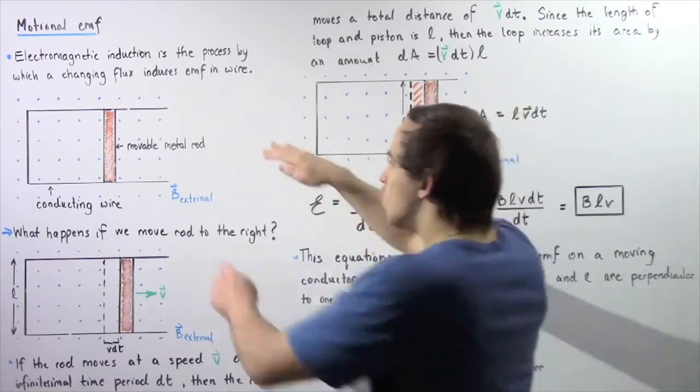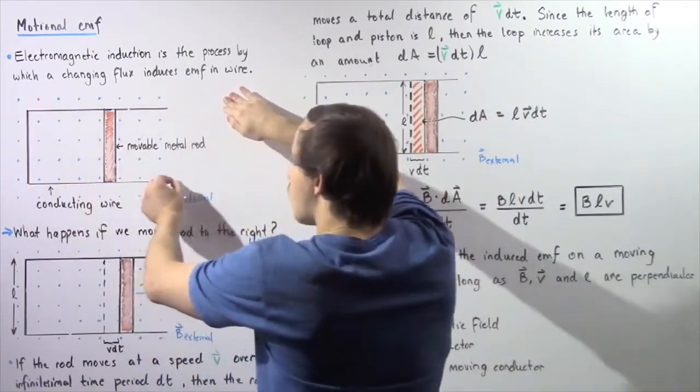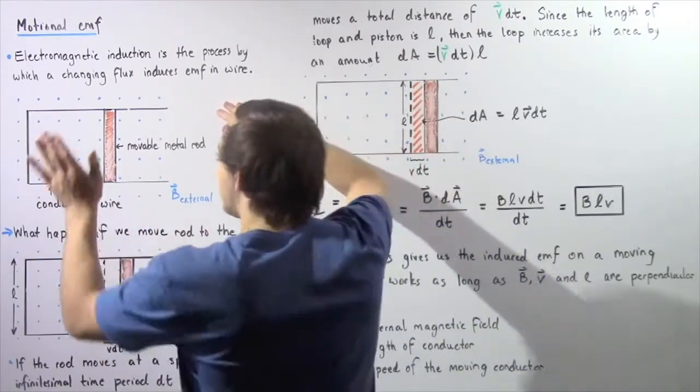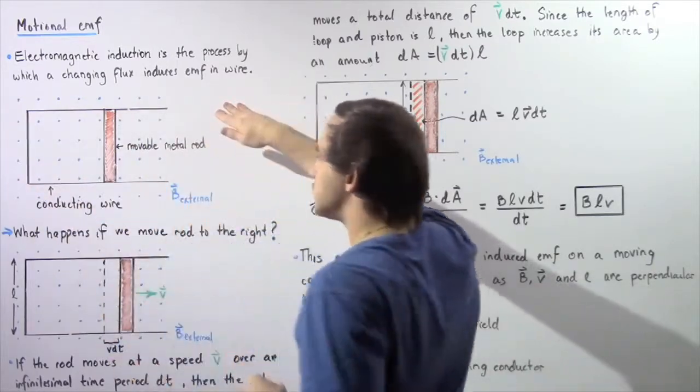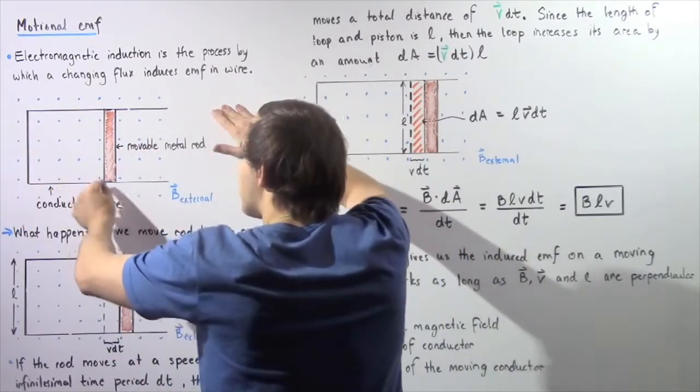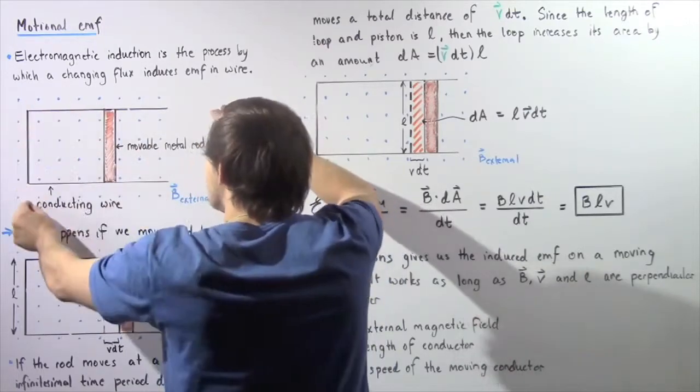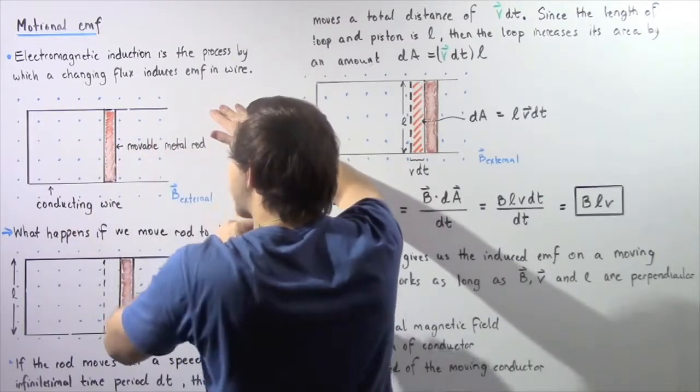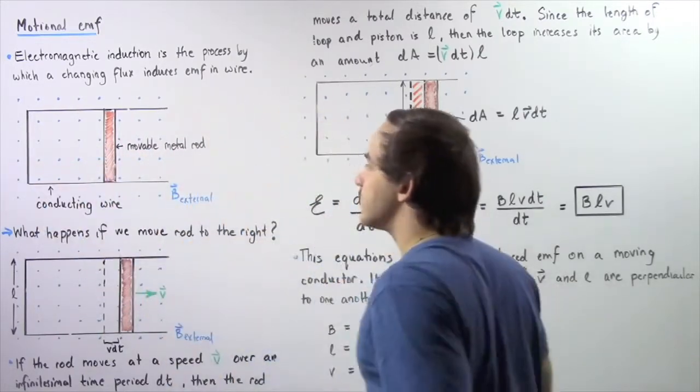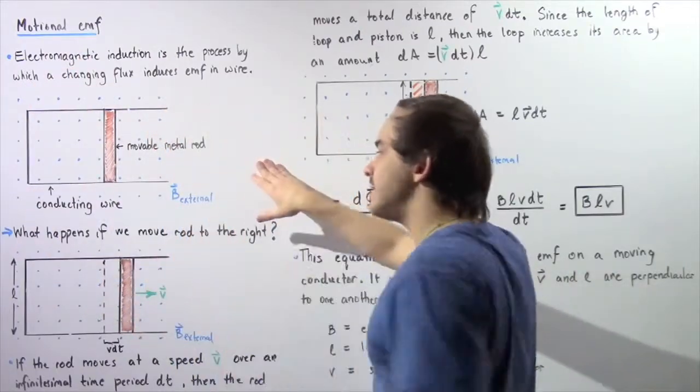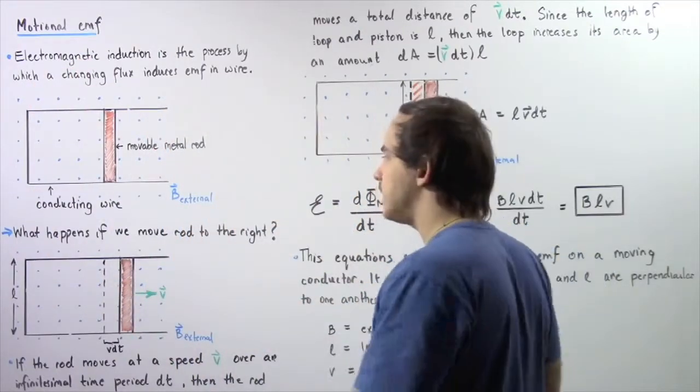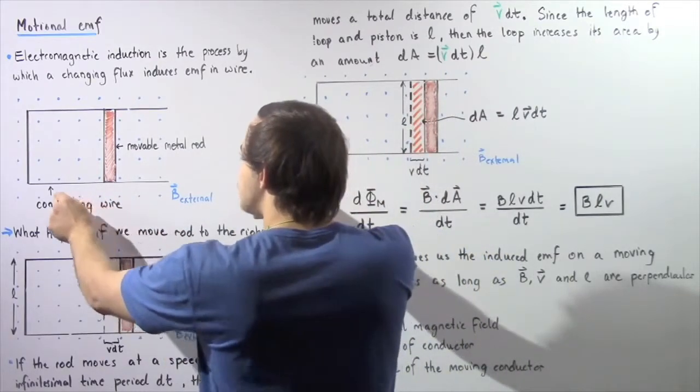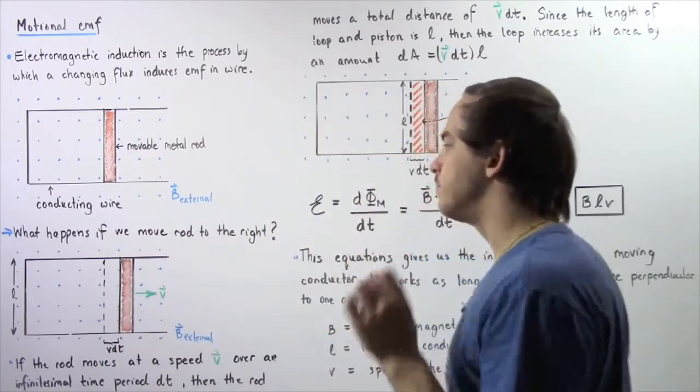Let's suppose we have a U-shaped conducting wire as shown, and we take a metal rod and place it on top of our U-shaped conducting wire so that we form a closed conducting loop. This metal rod is allowed to move across our x-axis, either to the left or to the right. This entire system is placed into an external magnetic field that is assumed to be uniform, given by B, which points out of the board as shown by the following blue dots.